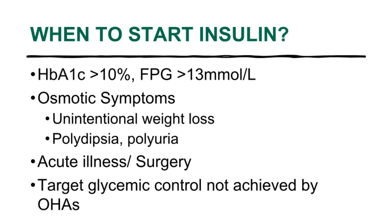Patients who are symptomatic, especially with osmotic symptoms such as unintentional weight loss and constant feeling of thirst. Patients who are acutely ill and under stress, or those going for surgery, will need insulin for better glycemic control. Patients with uncontrolled glucose despite maximal oral hypoglycemic agents will also need insulin.